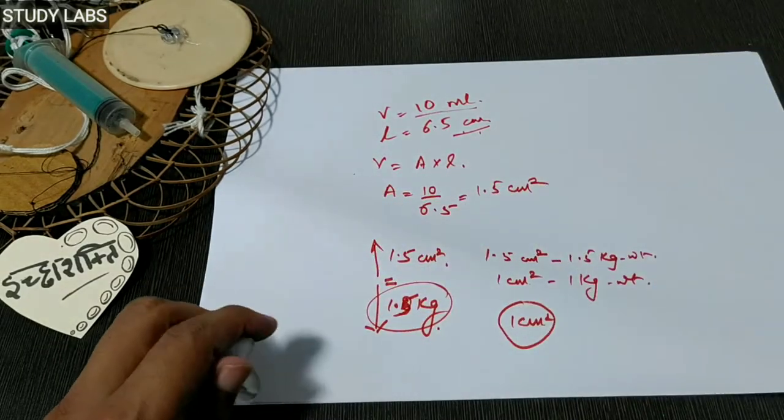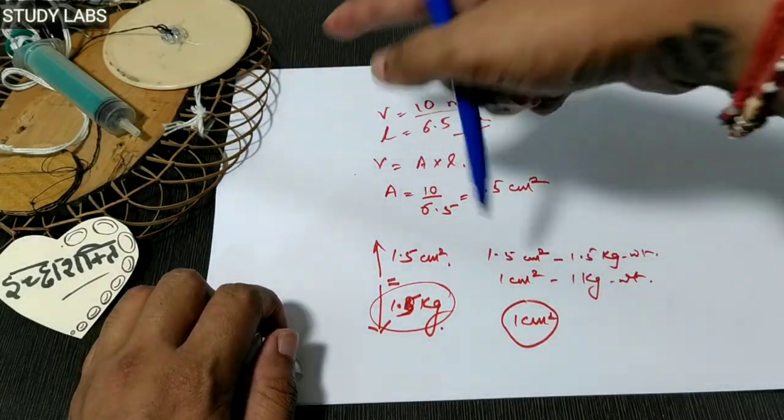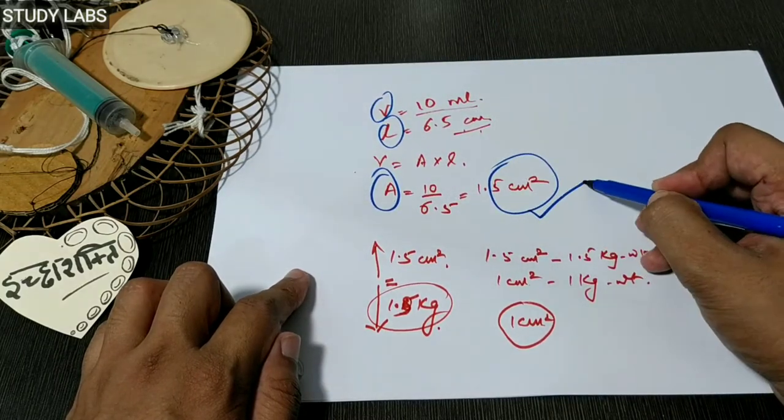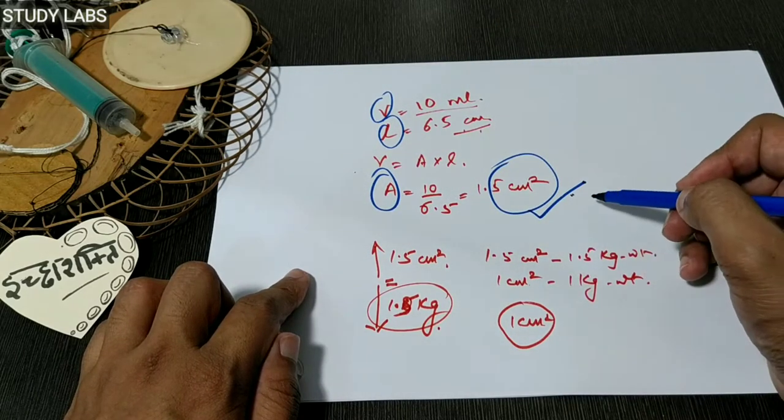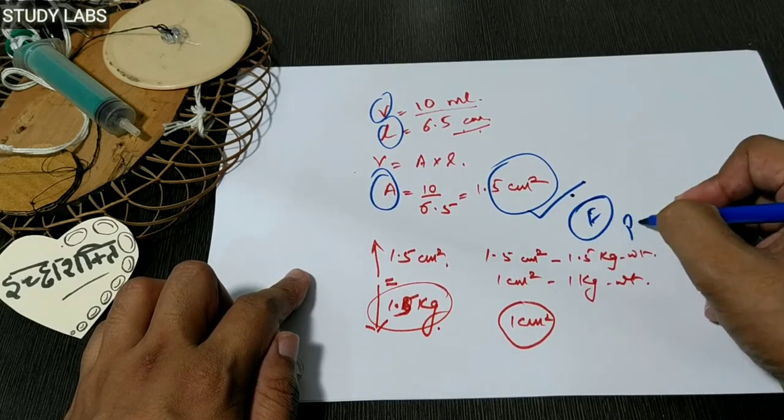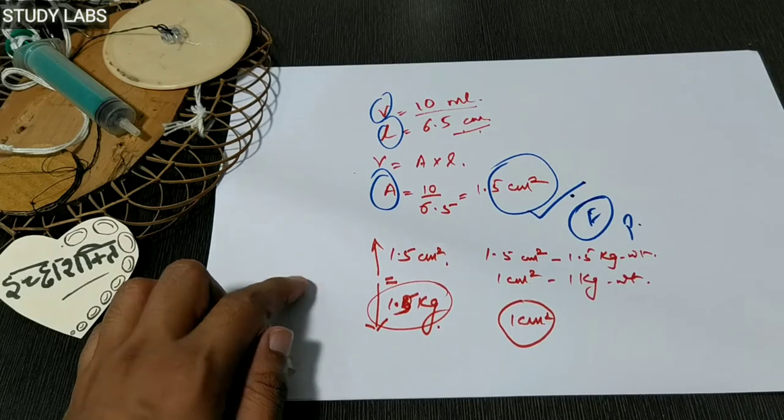So what are we going to do? Yesterday we did a syringe experiment. We saw the relationship between volume and area. From the area, we can calculate the amount of force or pressure. So we will try to measure this area.